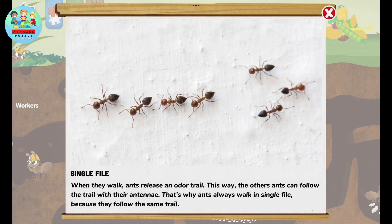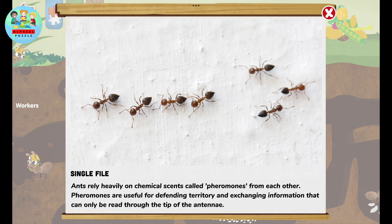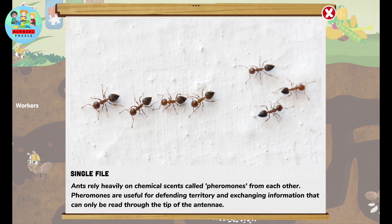When they walk, ants release an odor trail. This way, the other ants can follow the trail with their antennae. That's why ants always walk in single file — because they follow the same trail. Ants rely heavily on chemical scents called pheromones. Pheromones are useful for defending territory and exchanging information, and can only be read through the tip of the antennae.